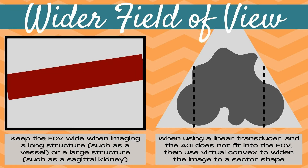When would you use the field of view or width ultrasound control? First, let's learn when you should widen the field of view. When using either a linear probe or a curvilinear probe, you want to keep the field of view as wide as possible when imaging a long structure such as a vessel. When imaging a vessel such as the sagittal aorta, it's okay for the sides of the vessel to be cut off outside the field of view as long as the vessel is as elongated as possible. You can also widen the FOV when imaging a large structure such as a sagittal kidney, ensuring both edges of the kidney are visible with a strip of normal tissue on both sides.